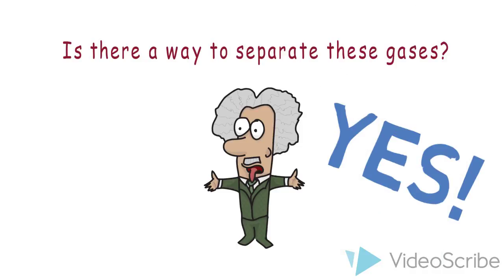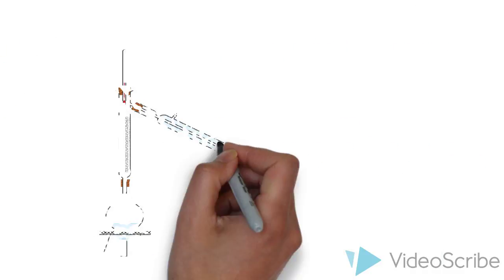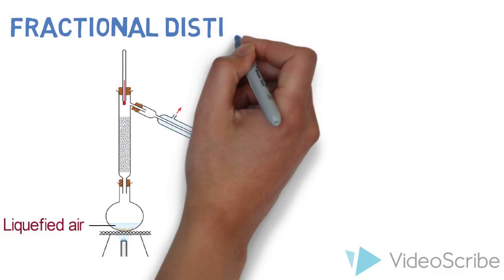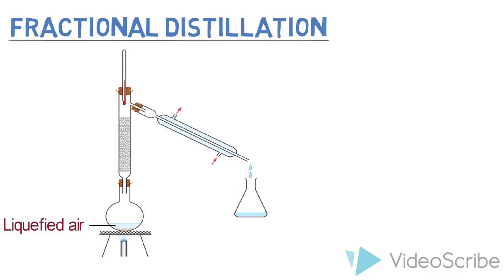So to do so, we have to first condense gaseous air to obtain liquefied air. Liquefied air is then separated using this technique that you see over here into the various components. Do you still remember what is this setup called? Yes, as some of you may recall, this setup is called fractional distillation. But do you still remember how are the various components being separated?